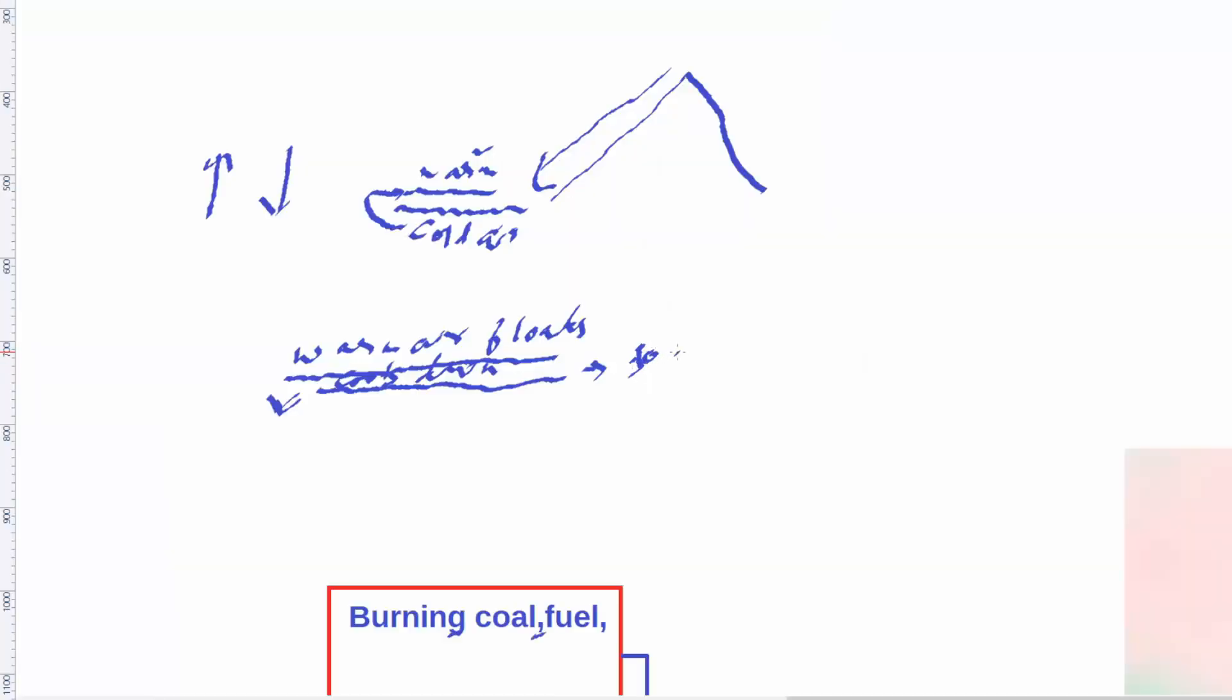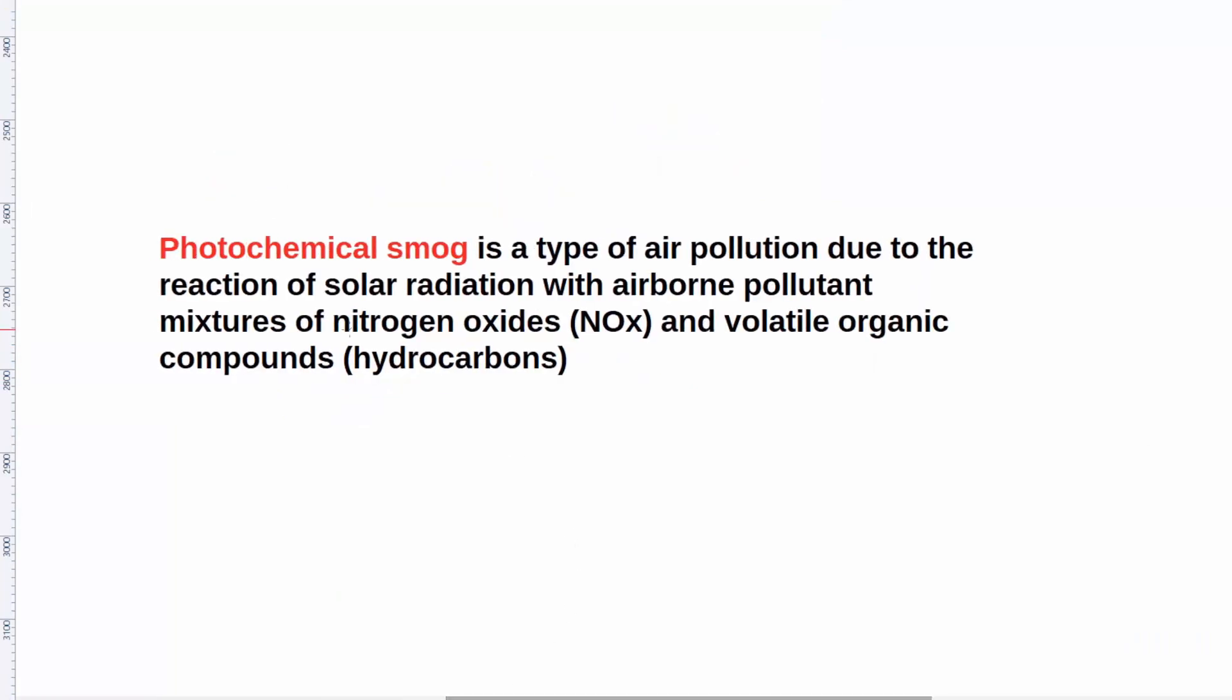I will further explain the situation in Delhi using the map. First of all, let us try to understand the photochemical smog. It is a type of air pollution due to the reaction of solar radiation with airborne pollutant mixtures of nitrogen oxides and volatile organic compounds.